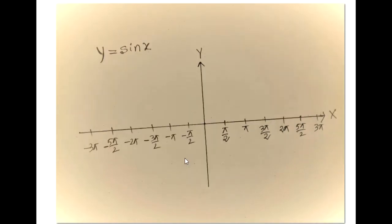Similarly, I will mark on the left side: negative pi over 2, negative pi, negative 3pi over 2, negative 2pi, negative 5pi over 2, and negative 3pi.